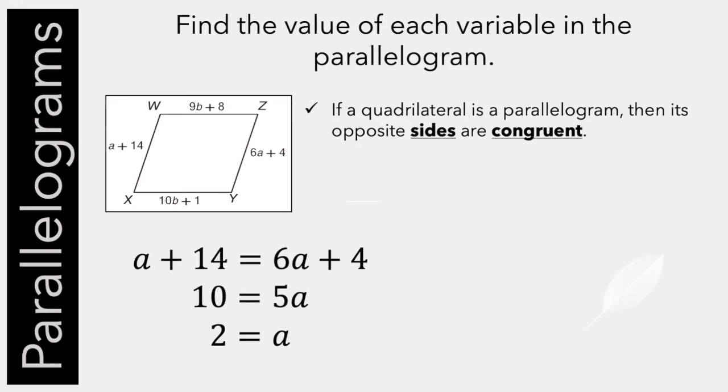We can do the same thing with the top and bottom sides. 9B plus 8 equals 10B plus 1. So we find that B equals 7.